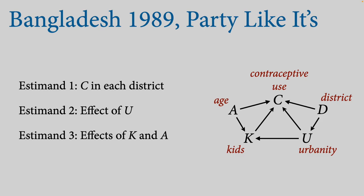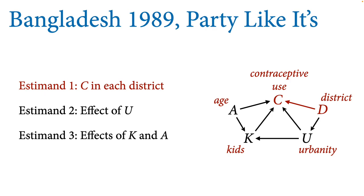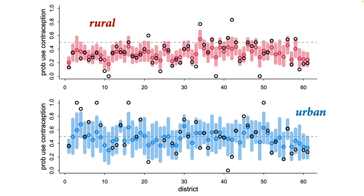Where we stopped last time was working through the Bangladesh owl — this 1989 fertility survey in Bangladesh — and I had sketched out a kind of playful DAG. The first thing we accomplished last time was to think about the varying effects strategy for estimating the unobserved district effects, so we could have a description and stratify contraceptive use by each district. This is what we got: variation across districts divided by rural and urban. In general, there's more contraceptive use in urban areas than in rural areas, and there's also less data in urban areas, so the uncertainty intervals are larger.